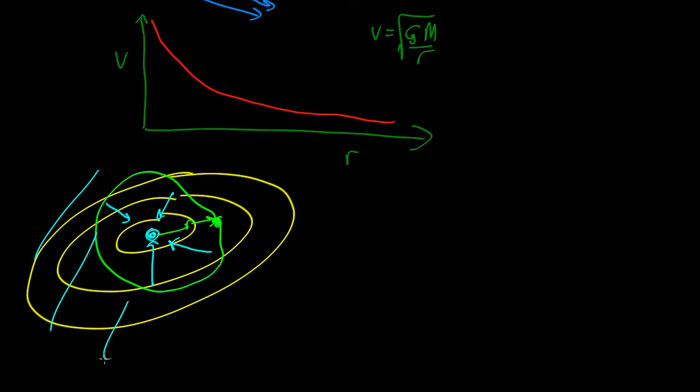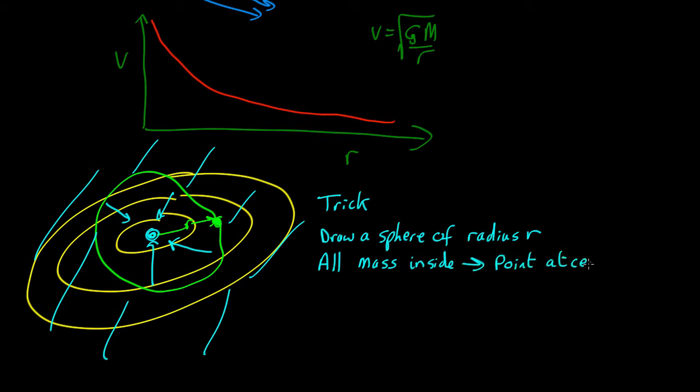Then all the mass that's outside, you can ignore. So that's the trick. Draw a sphere of radius r. Move all the mass inside, within the sphere to the point in the centre. All the mass outside, you ignore.